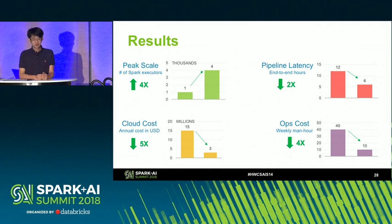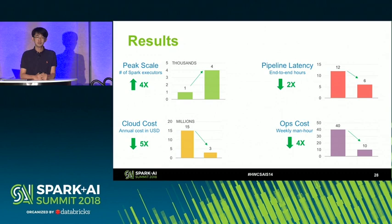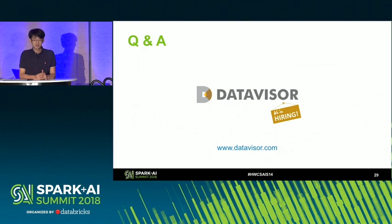In summary, we built SparkGen to handle all of our Spark jobs and Spark clusters at DataVisor. With SparkGen, at peak time we scale our computation to 4x, cut the cloud bill by 5x compared to the naive approach we adopted before, and reduce operation overhead by 4x. At the same time, we reduce pipeline latency by 2x. Thank you.